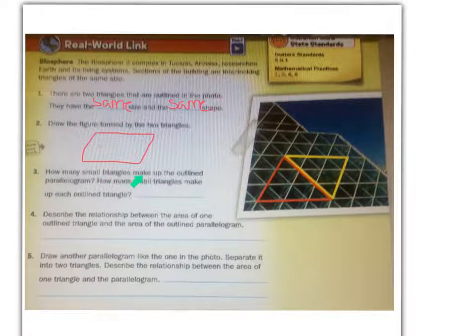How many small triangles make up the outlined parallelogram? So let's count them. One, two, three, four, five, six, seven, eight, nine, ten, eleven, twelve, thirteen, fourteen, fifteen, sixteen, seventeen, eighteen. There are 18 triangles in the parallelogram.